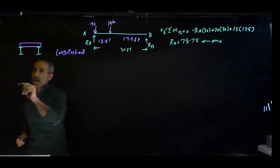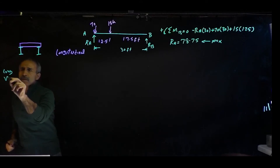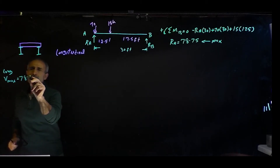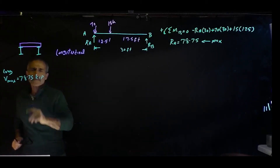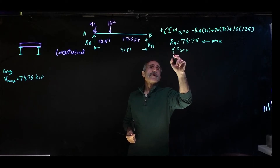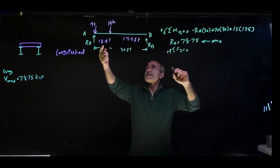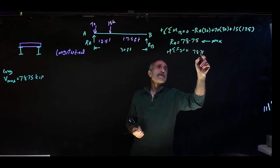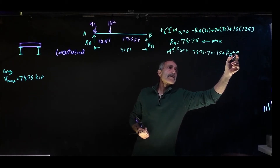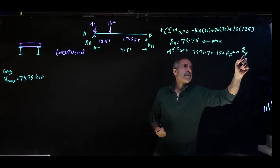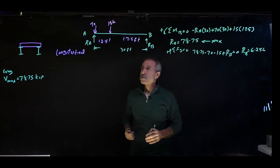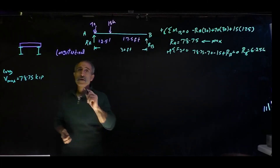I'll make a chart: for longitudinal, V-max equals 78.75 kips. Just to complete this, summation FY equals zero gives RB equals 6.25 kips — confirming 78.75 kips is the maximum shear. Now let's look at the transverse case.